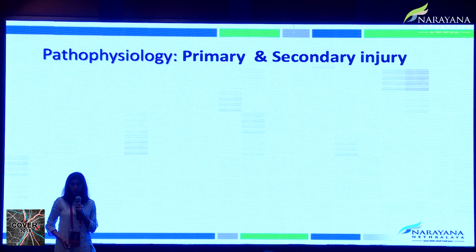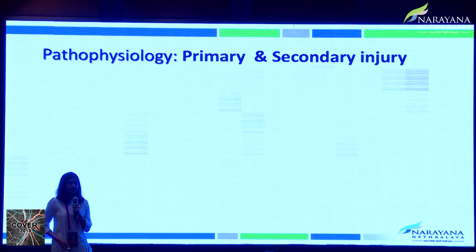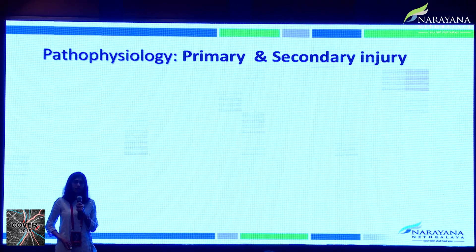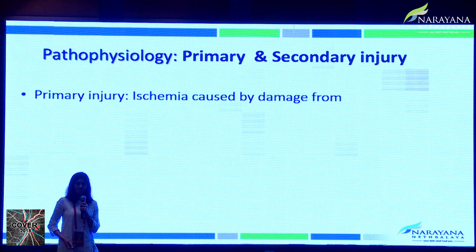Based upon the pathophysiology, it can be classified as primary and secondary injury. Primary injury indicates ischemia to the optic nerve caused by mechanical shearing of the optic nerve axons and contusion necrosis. Secondary injury occurs subsequent to the trauma, wherein ischemia causes optic nerve swelling, which further reduces blood flow to the optic nerve and causes eventual cell death.